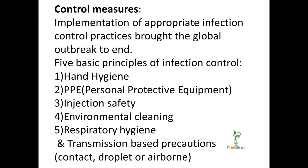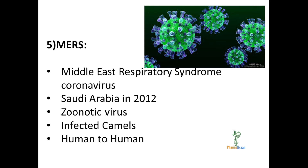The fifth one is MERS — Middle East Respiratory Syndrome coronavirus. It was first identified in Saudi Arabia in 2012. It is a zoonotic virus; humans are infected through direct or indirect contact with infected camels. Human-to-human transmission does not pass easily from person to person unless there is close contact.